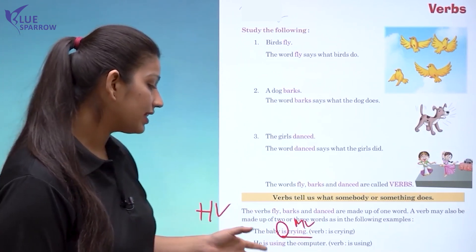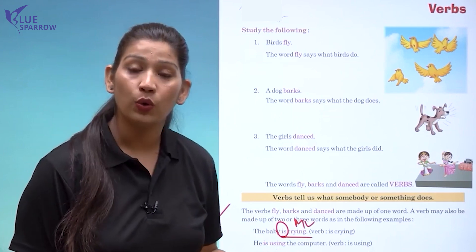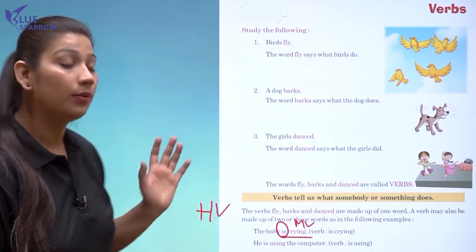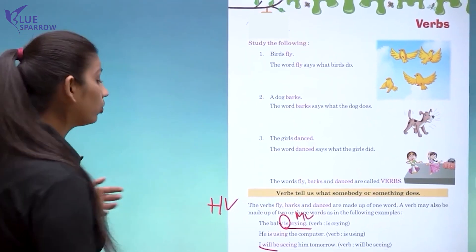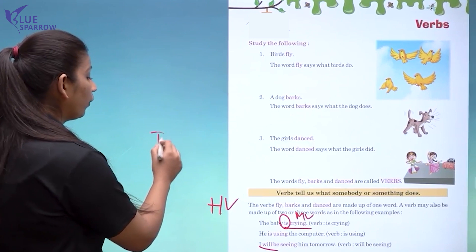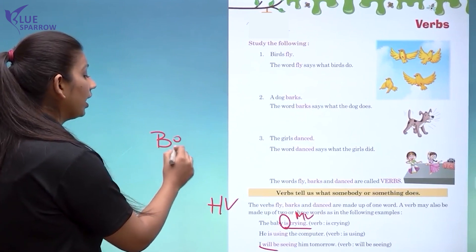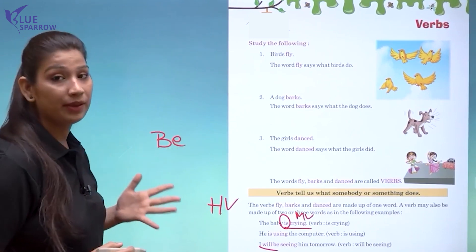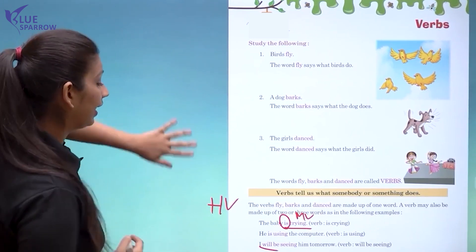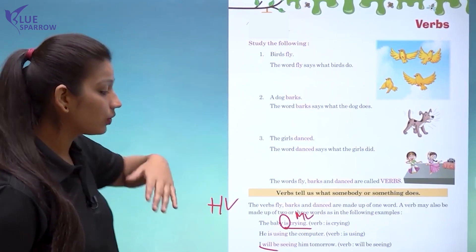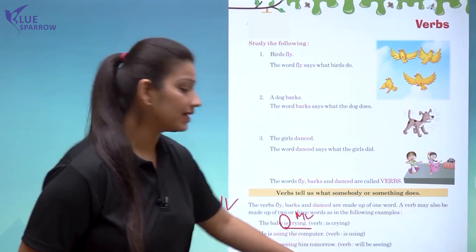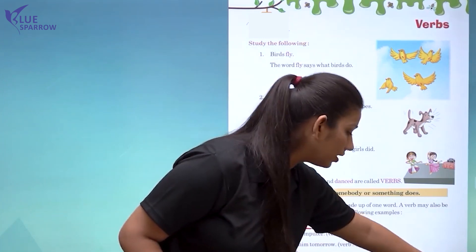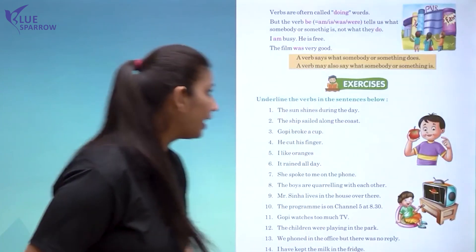'I will be seeing him tomorrow.' Here 'will be' are helping verbs — these are called be-form verbs or helping verbs. 'Will' is also a helping verb. Let us move forward to understand more.